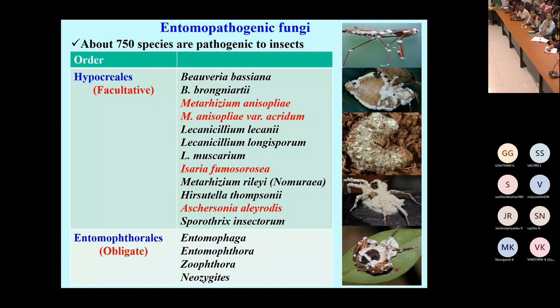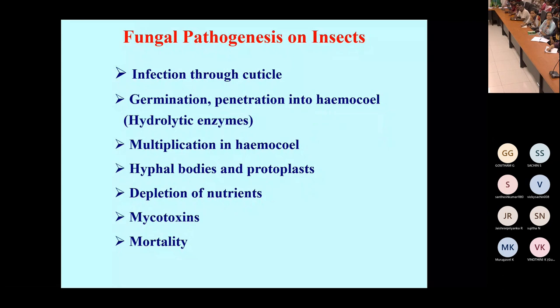For the Hypocreales order, we have done several works in India, mainly focusing on Beauveria, Metarhizium, Lecanicillium, and Isaria. The fungal pathogenesis involves infection through the cuticle as the first step, followed by germination and penetration into the hemocoel.